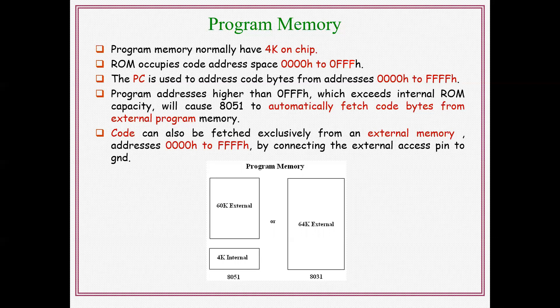Internal or external memory can be selected using a signal called EA bar (External Access). It is an active-low signal. If EA bar is zero, external memory is accessed. If EA bar is one, internal memory is selected — which accesses internal 4KB plus external 60KB, totaling 64KB. If external memory is selected, only the external 64KB memory is accessed.